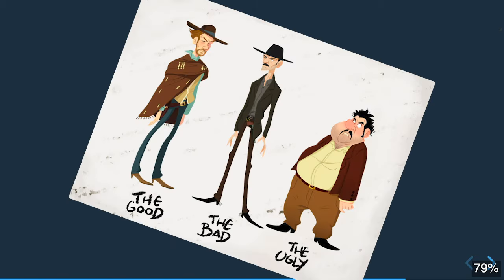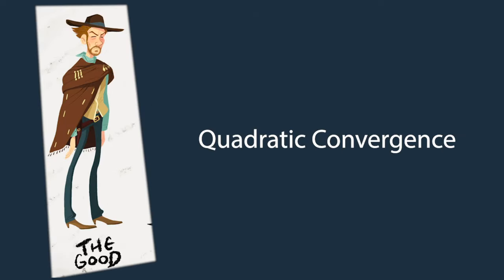Let us now discuss some good and bad things about Newton's method. Arguably the biggest pro is its fast convergence. More precisely, when you get close to the minimizer, Newton's method has quadratic convergence. At a high level, this means that at every iteration we double the number of exact digits in our approximation.